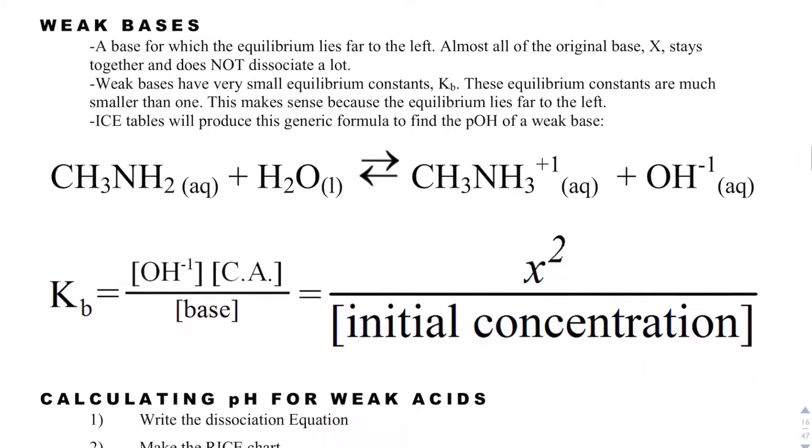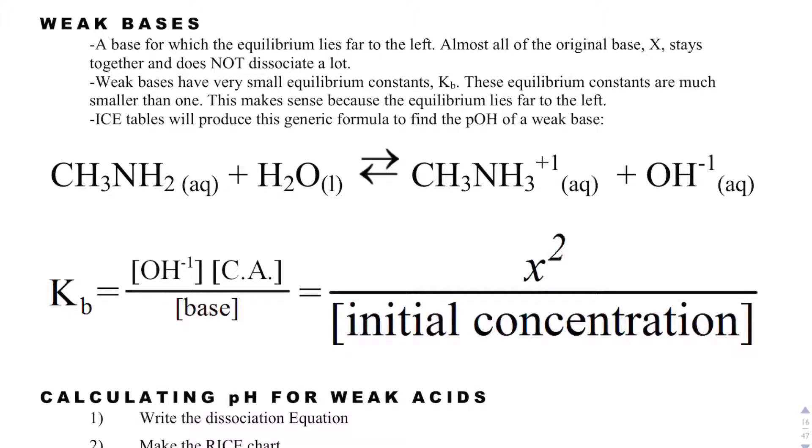Weak bases, on the other hand, they are not going to dissociate a whole bunch. So they're not going to produce a whole bunch of hydroxide, and they're going to have very small equilibrium constants because of that, or very small Kb's. And we are going to have to use ice boxes or rice tables to figure out whatever the question is asking.